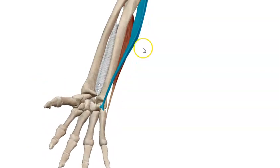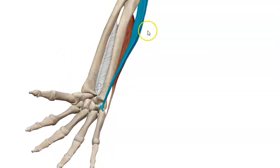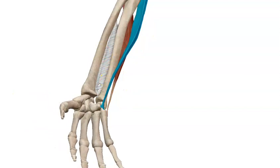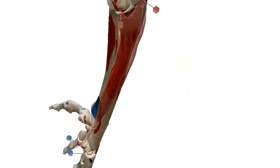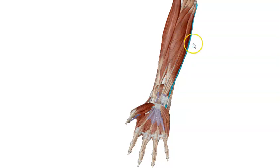So we have flexor carpi radialis performing abduction of the hand and flexor carpi ulnaris performing adduction of the hand. Now we will discuss the last muscle, which lies in a different plane from all the others: pronator teres, flexor carpi radialis, palmaris longus, and flexor carpi ulnaris are all in the same anatomical plane, hiding below them the flexor digitorum superficialis. It is called digitorum because it is the only muscle in this group that reaches the fingers.